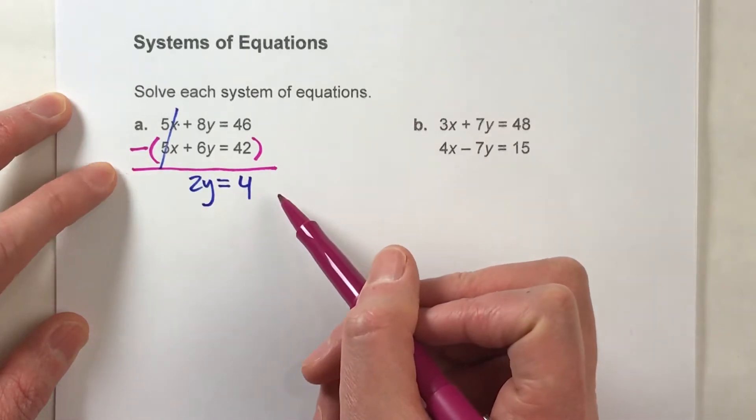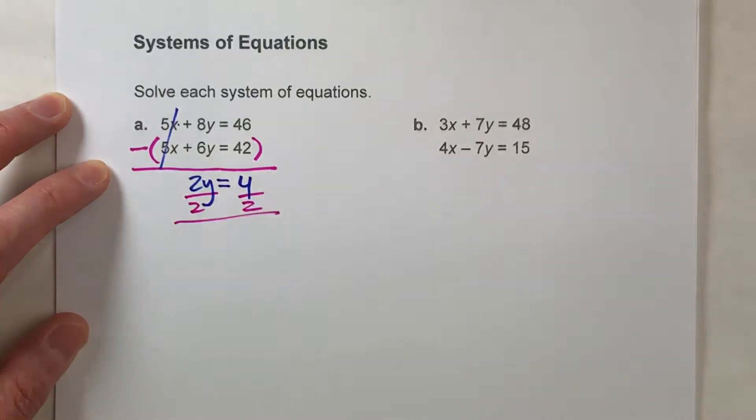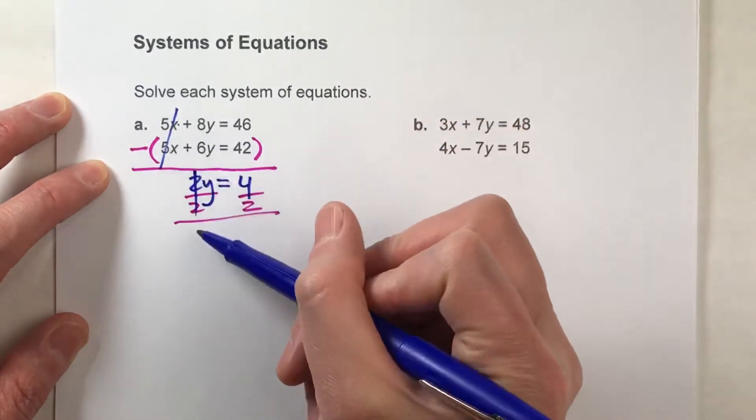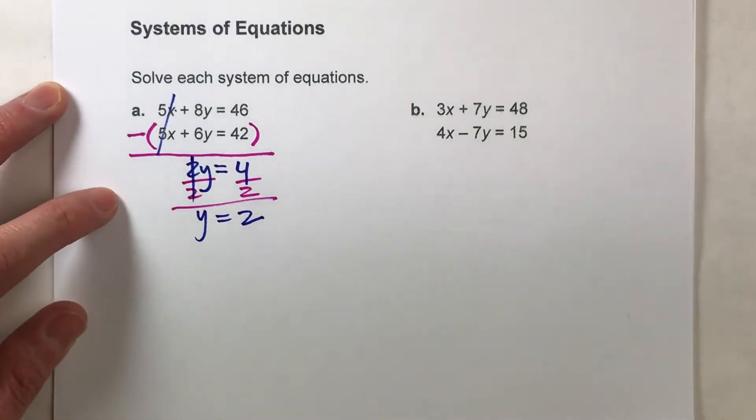All right, so let's finish solving this for y. I'm going to divide both sides by 2. When I do that, the 2's undo each other. y equals 2. I'm halfway done. So I figured out what y is.